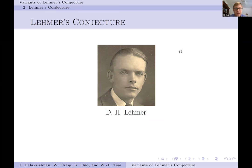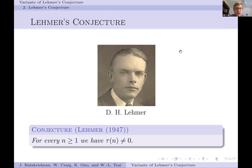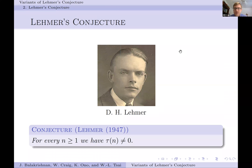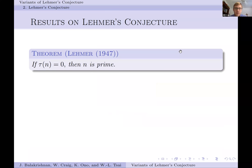In this light, we want to talk about a conjecture of D.H. Lehmer. In 1947, Lehmer conjectured that for n greater than or equal to 1, the tau function is never 0. By multiplicativity, it makes sense to try to find where tau equals 0 first. Lehmer proved himself that if tau(n) is ever 0, then we can choose n to be a prime. So everything boils down to finding when tau(p) equals 0 for prime p.